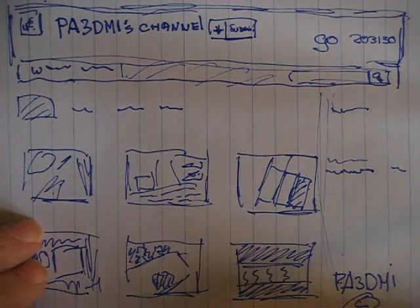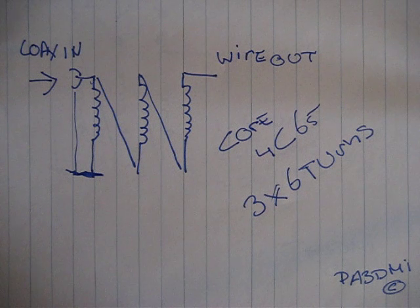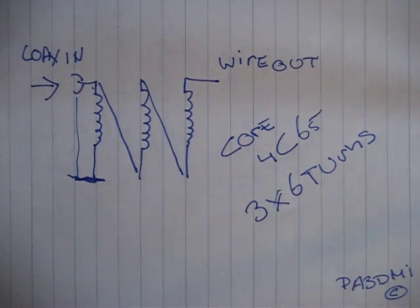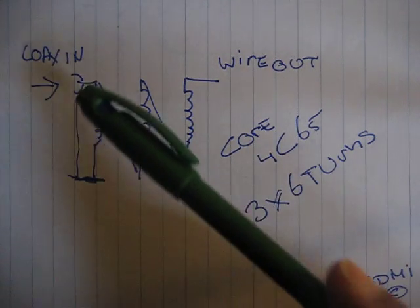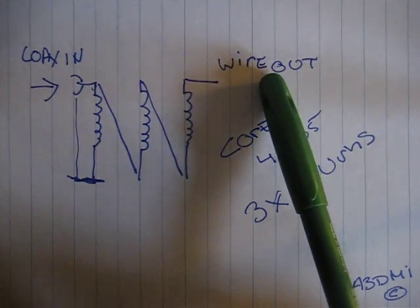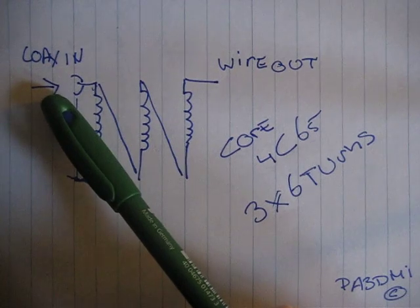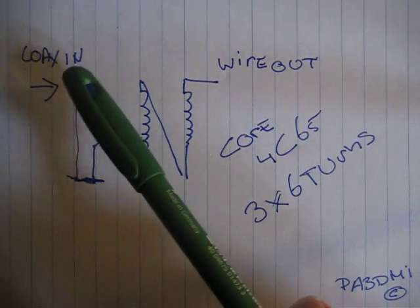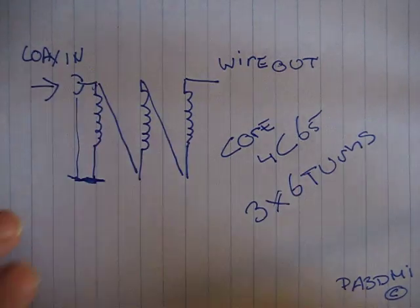This is the schematics of the balun. It uses a core, 4C65, and you use 6 turns, 3 times. This is 6 turns, this is 6 turns, this is 6 turns. This is the output wire. It's about 16 meters and 20 centimeters. And this is coax in. Input, and this is the ground. Only the first coil goes to the ground.